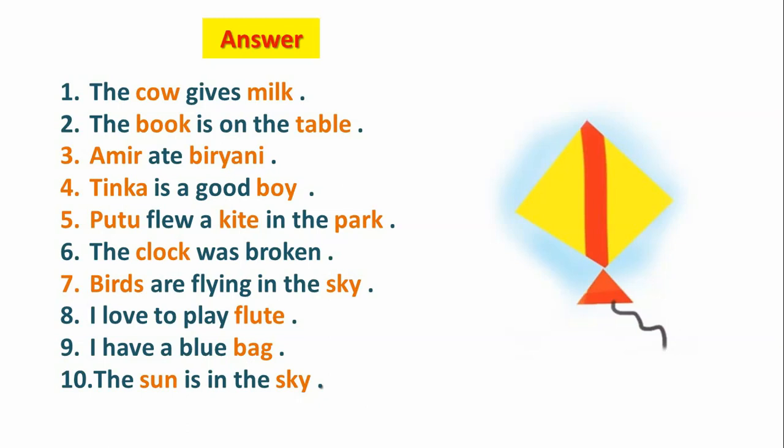Number six: clock is a noun. Number seven: birds and sky are nouns. Number eight: I love to play flute — flute is a noun, as it is the name of a musical instrument. Number nine: bag is a noun. Number ten: sun and sky are nouns.